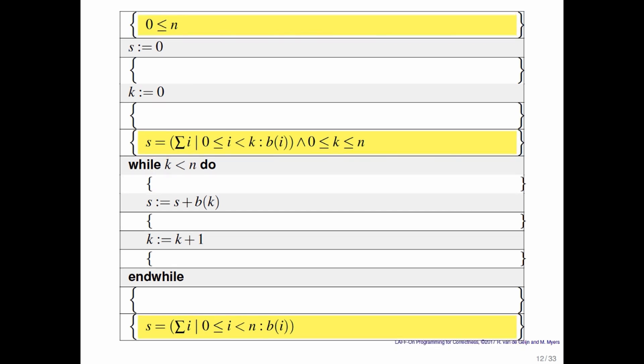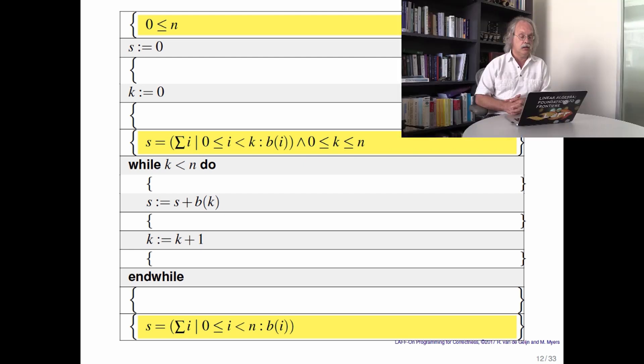Here we have the same annotated algorithm where we've taken the English away altogether. I want you to now do the homework in which you will drag and drop assertions into this algorithm. And then when you're done with that, I want you to think about what those assertions say about the program. And then I'll see you in the next video where we will discuss the result.